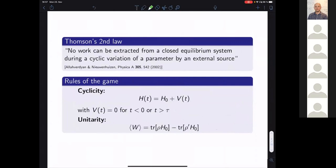Are we in an asymptotic regime or what are the rules of the game? And one way that this has been approached is to go back to Thompson's version or Lord Kelvin's version of the second law, which can be paraphrased as here, from a closed equilibrium system during a cyclic variation of a parameter by an external source.